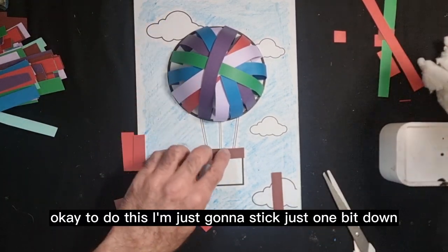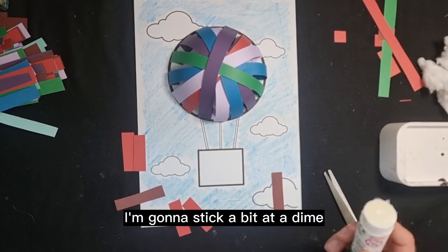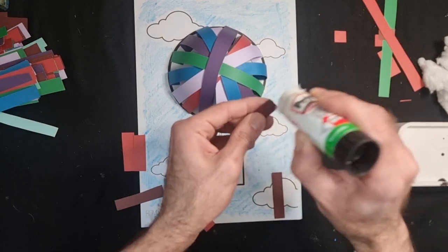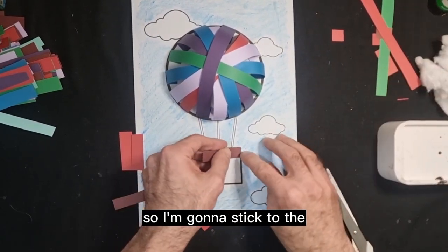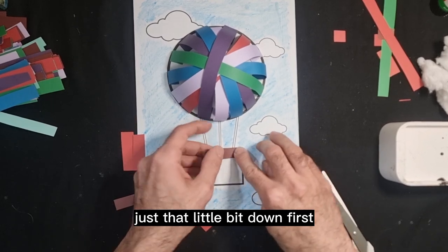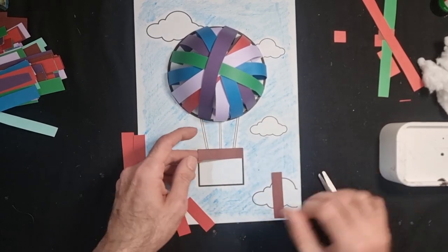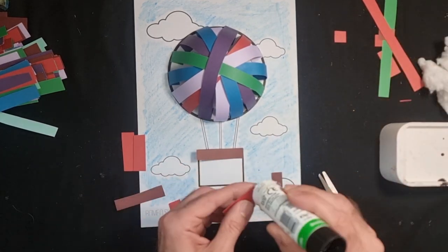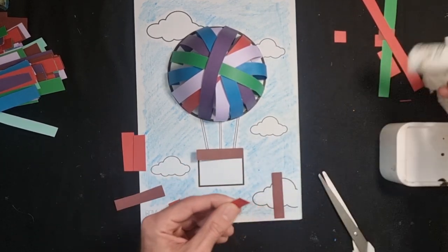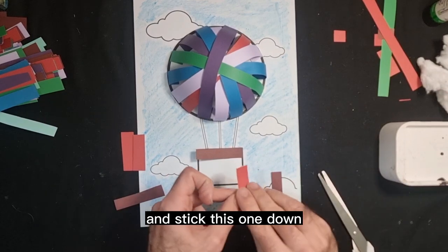Okay, to do this I'm just going to stick just one bit down. I'm going to stick a bit at a time so I can get that woven in effect. So I'm going to stick just that little bit down first. I haven't stuck it all. And then I'm going to take this one and stick this one down.